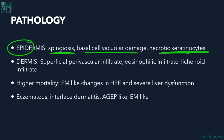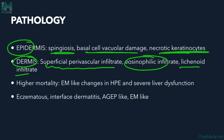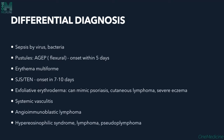Histopathologically, the epidermis shows spongiosis, basal cell vacuolar damage, and necrotic keratinocytes. In the dermis, there is superficial perivascular infiltrate with predominantly eosinophilic and lichenoid inflammatory cells. Higher mortality is associated with erythema multiforme-like changes and severe liver dysfunction. Eczematous interface dermatitis, AGEP-like, and erythema multiforme-like histopathological presentations may also occur.